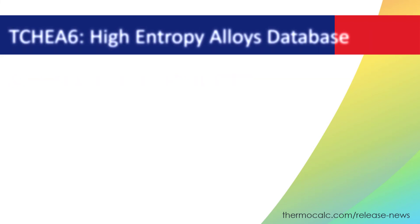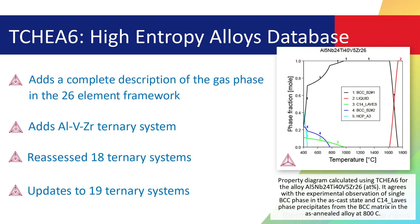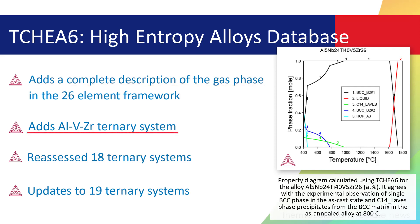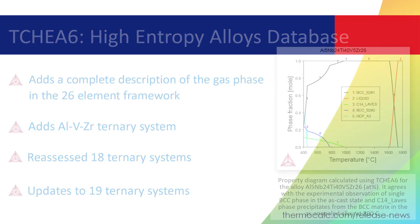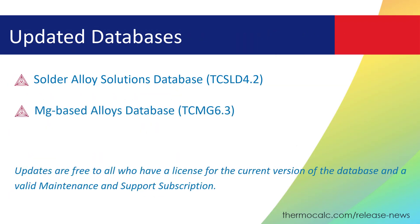A new version of our high-entropy alloys database, TCHEA6, is also available with this release. The database adds a complete description of the gas phase in the 26 element framework, and also adds the aluminum-vanadium-zirconium ternary system, and more. This release also includes updates to two additional databases, as listed on the screen.